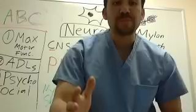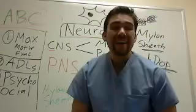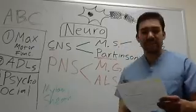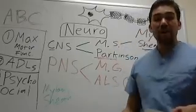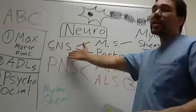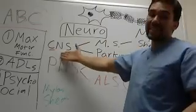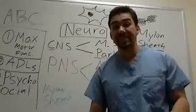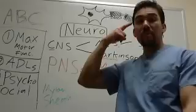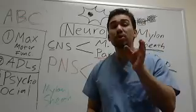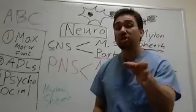Let's break down multiple sclerosis. We know that multiple sclerosis comes from our central nervous system — our brain and spinal cord. Those are the two components of your central nervous system.